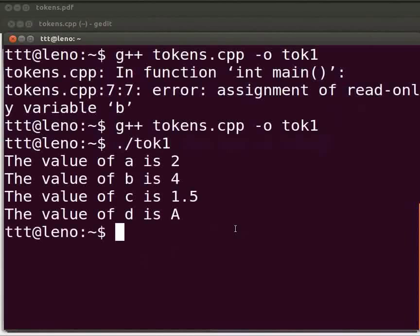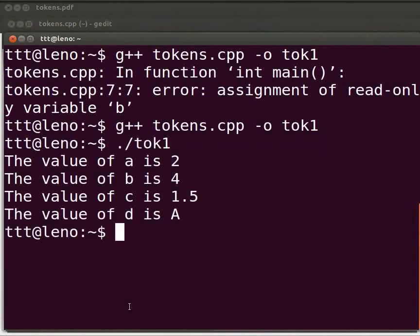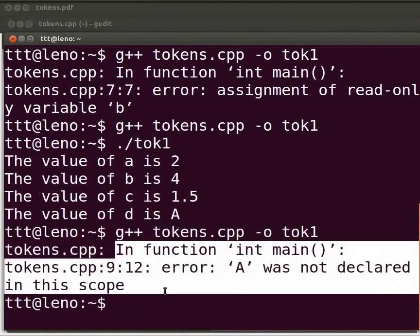Now, we will see another common error. Switch back to our program. Suppose here, I miss a single quote. Click on save. Let us execute. Come back to our terminal. Compile as before. We've seen an error at line number 9 in our tokens.cpp file. A was not declared in the scope. Come back to our program.